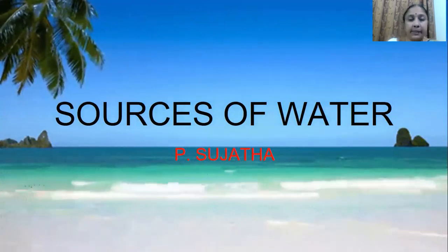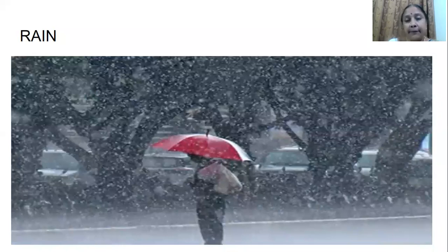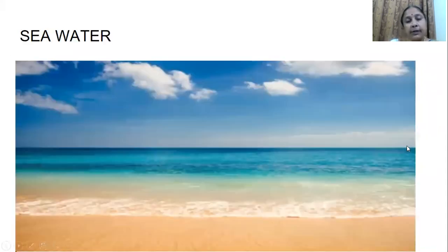The first thing — we get water from rain. So many times you might have seen water coming from the sky. That is rain. When it is raining, you take an umbrella, you take a raincoat and go around. But the important thing is we get water from rain.